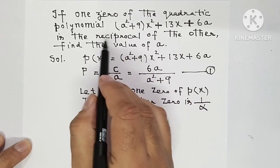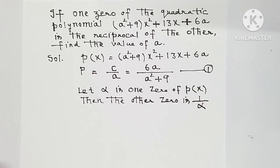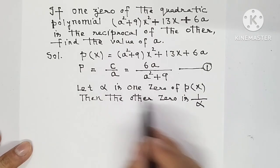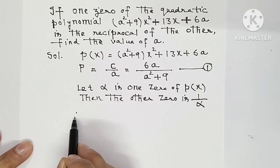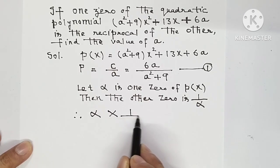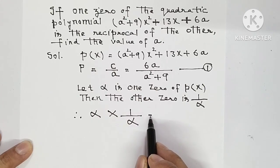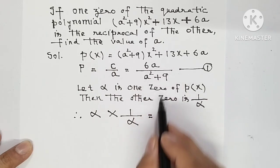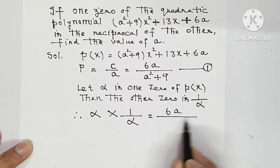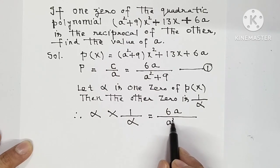So, 1 upon α. Because in the question it is given one zero of the polynomial is the reciprocal of the other. So one zero is α and the other zero is 1 upon α. Therefore, α multiplied by 1 upon α means product of both the zeros. It is equal to 6a upon a² + 9.